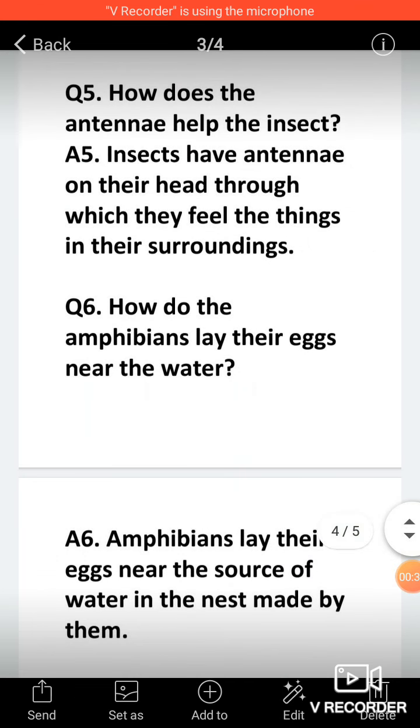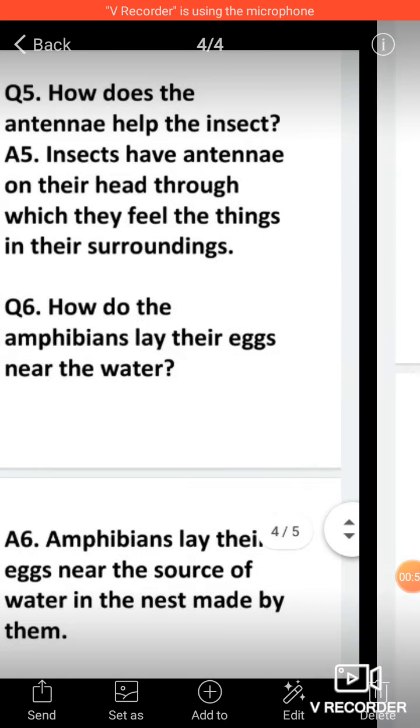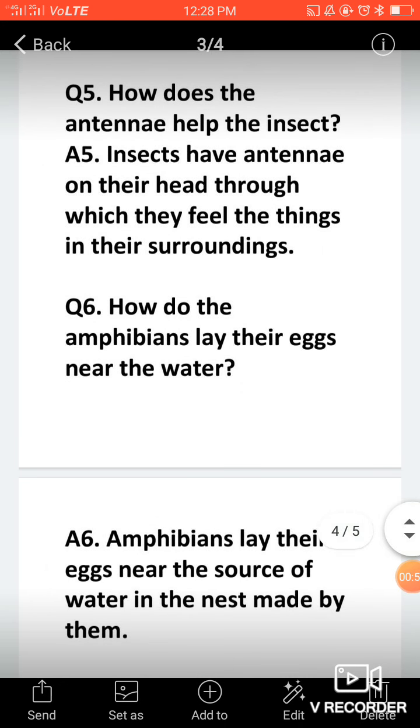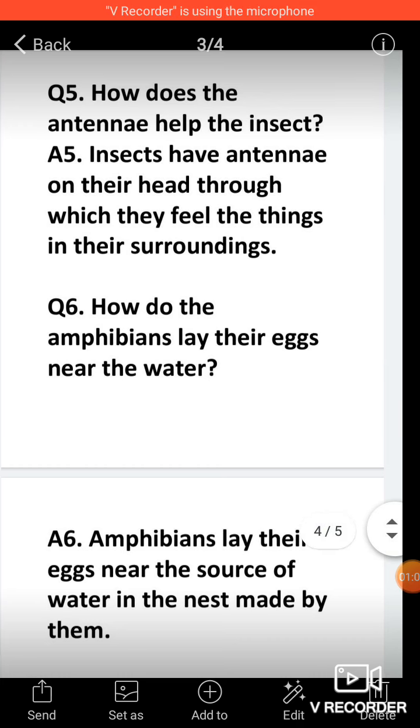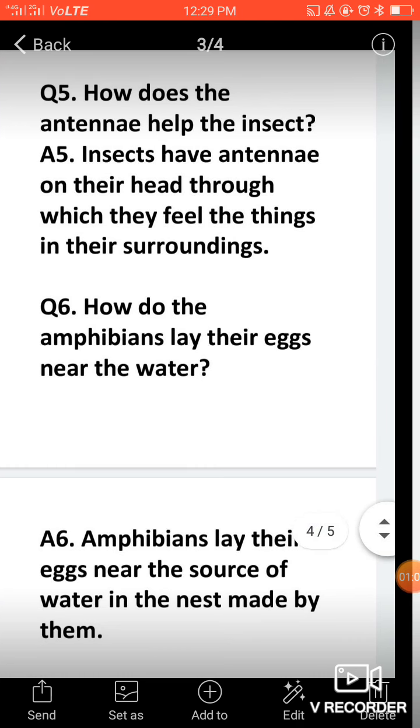Now fifth question onwards, how does the antenna help the insect? Everybody knows insects have two antennas on their head. Insects have antenna on their head through which they feel or sense the things in their surrounding.